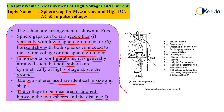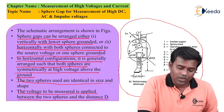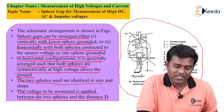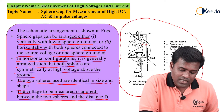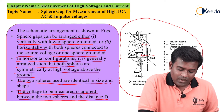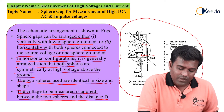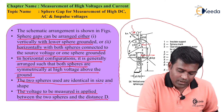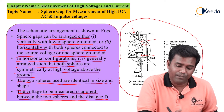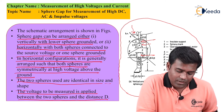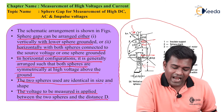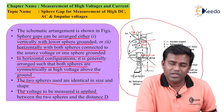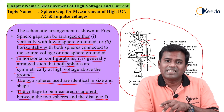This figure shows the horizontal arrangement of Sphere Gap measurement. Another figure shows the vertical arrangement, where the two spheres are arranged vertically. In the vertical arrangement, one sphere is grounded. The insulator support holds the structure, and the sphere shank is where the spark is generated due to the high peak value of voltage.